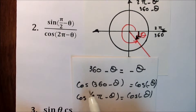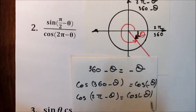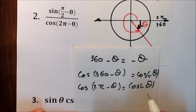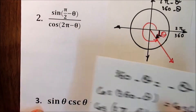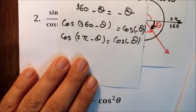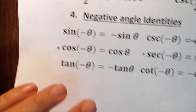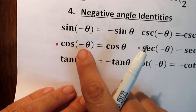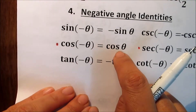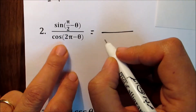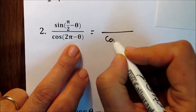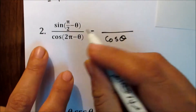360 minus theta is equivalent to negative theta. So cosine of 360 minus theta equals cosine of negative theta, meaning cosine of 2 pi minus theta equals cosine of negative theta. If it's cosine of negative theta, recall the negative angle identities — cosine is always positive, so cosine of negative theta equals cosine theta. Down we have cosine theta.